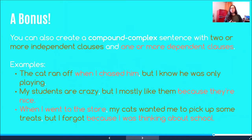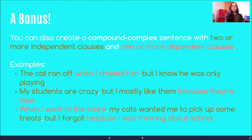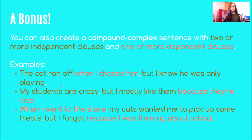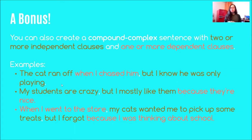You can also create a compound-complex sentence with two or more independent clauses and one or more dependent clauses — that's when you take a compound sentence and add a dependent clause to it. 'The cat ran off when I chased him, but I know he was only playing.' The independent clauses are 'the cat ran off' and 'I know he was only playing,' and the dependent clause is 'when I chased him.' 'My students are crazy, but I like them because they're nice.' 'When I went to the store, my cats wanted me to pick up some treats, but I forgot because I was thinking about school.' In that last one, we have two dependent and two independent clauses.